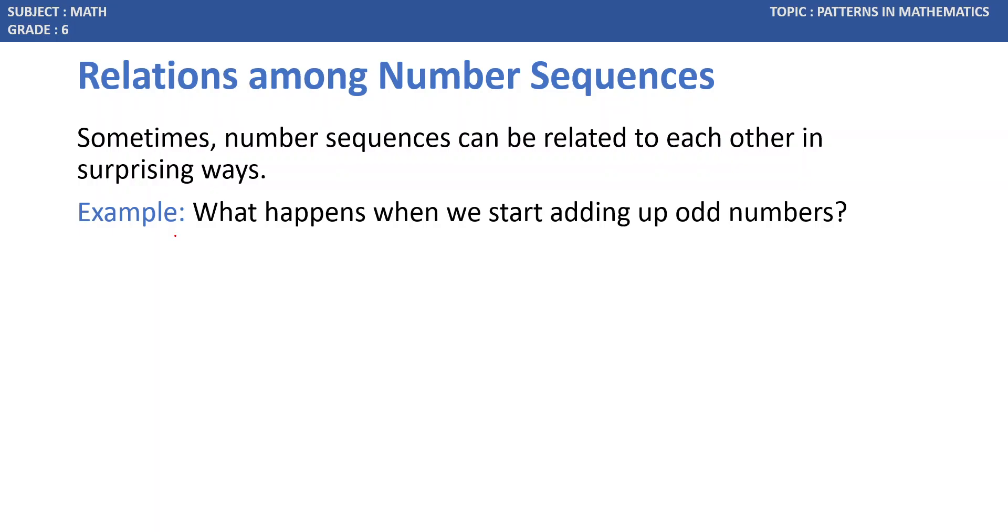For example, what are the odd numbers? 1, 3, 5, 7. What if we add 1? It's 1. 1 plus 3 is 4. Next number is 5. 1 plus 3 plus 5 is 9.